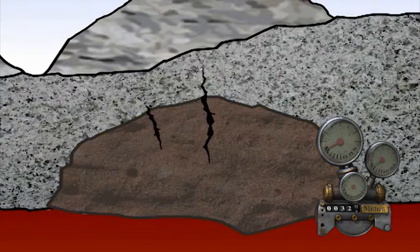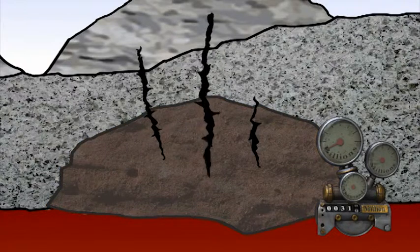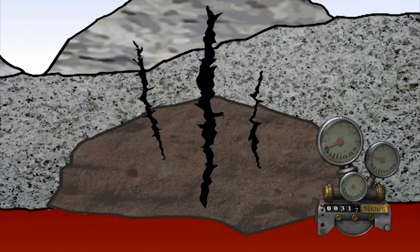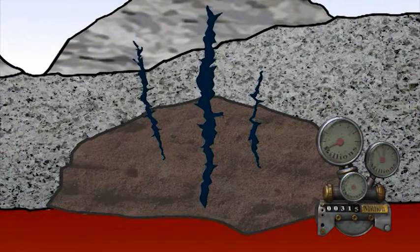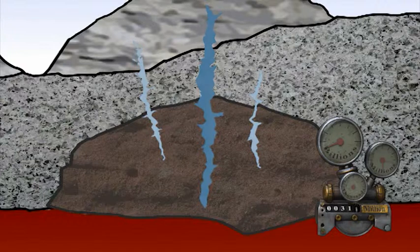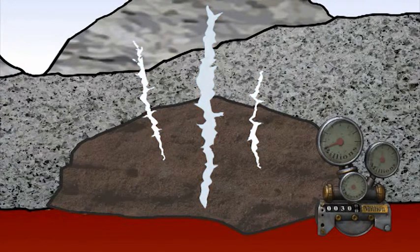As the batholith cooled, vertical cracks opened up. These also extended into the surrounding rocks, allowing mineral-rich fluids to flow through them. Eventually, these fluids cooled sufficiently to allow the contained minerals, such as tin, to be deposited into the cracks to form mineral veins, or lodes.